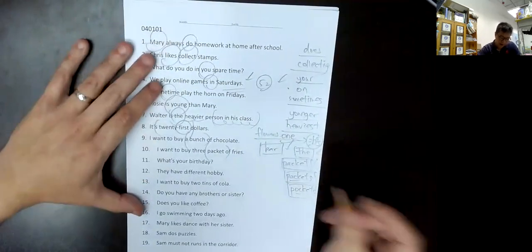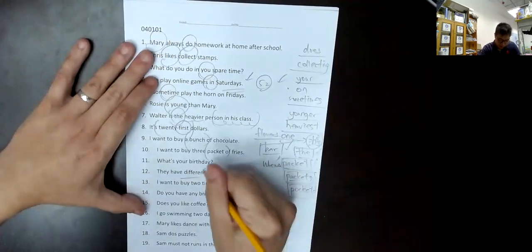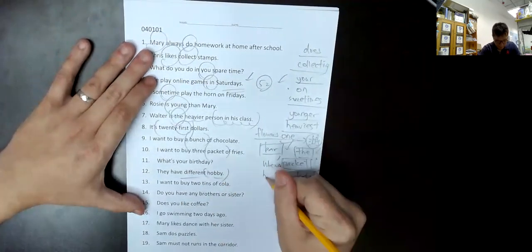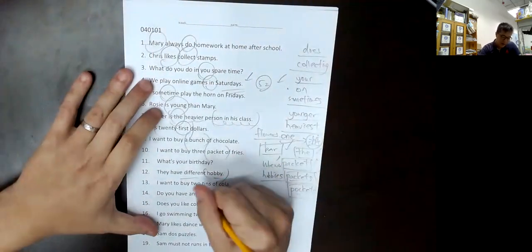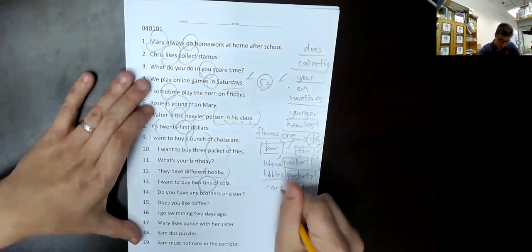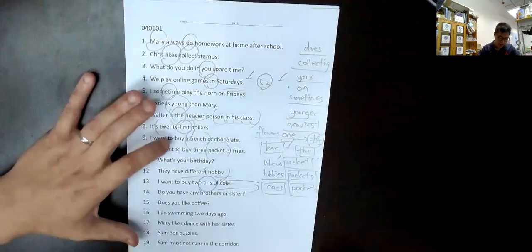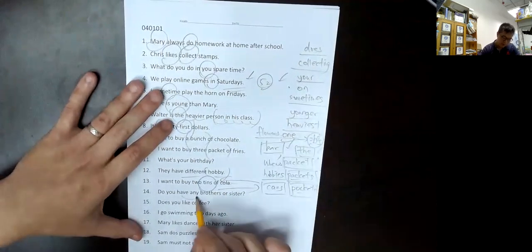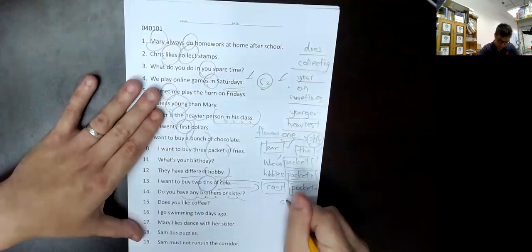When is your birthday? Question 11, when is your birthday? Different usually with plural, Y sound, hobbies. Cans are used to open things, coke doesn't need cans to open. Do you have brothers, do you have sisters? Even if you don't, use plural sisters.